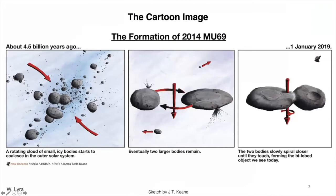Let's start with a cartoon image. About 4.5 billion years ago, remote chunks of rock, metal, and ice came together to form two lobes. These two lobes were in orbit with each other and somehow they spiraled into contact and formed what we know as MU69, aka Arrokoth.